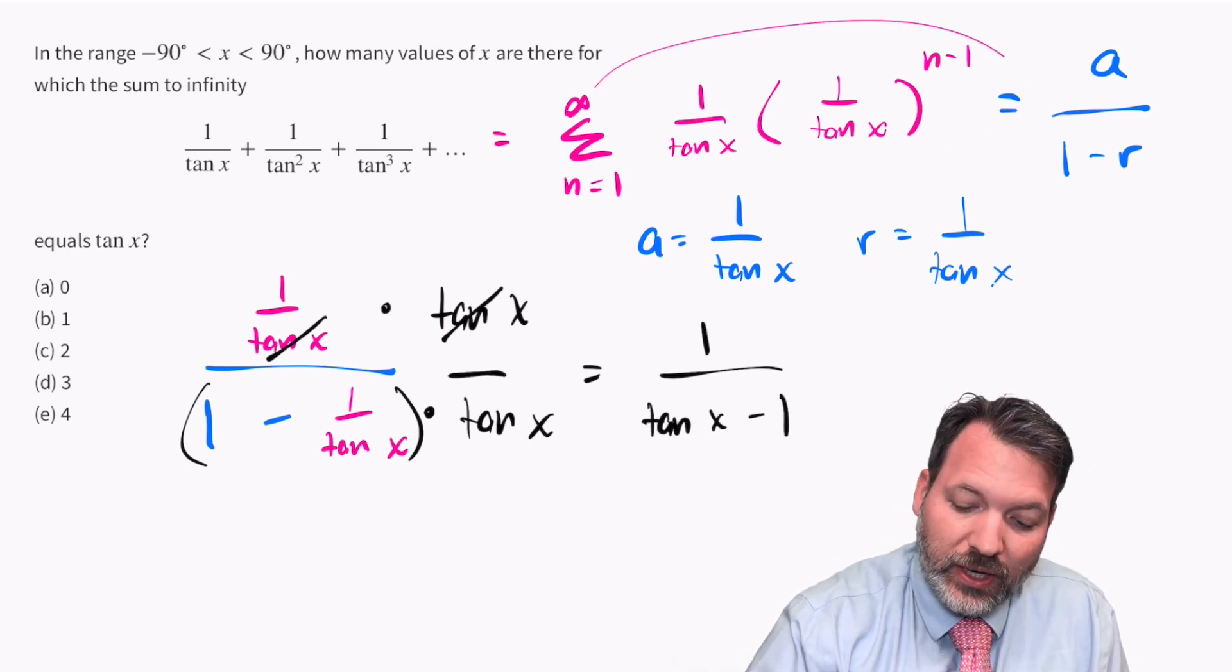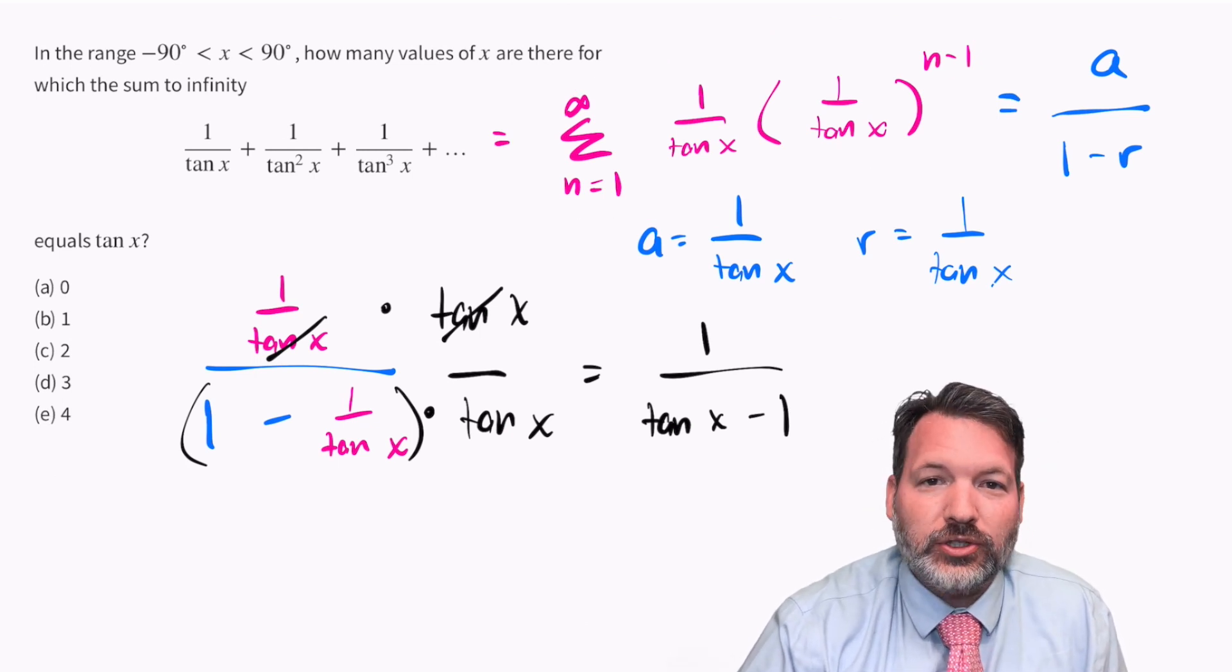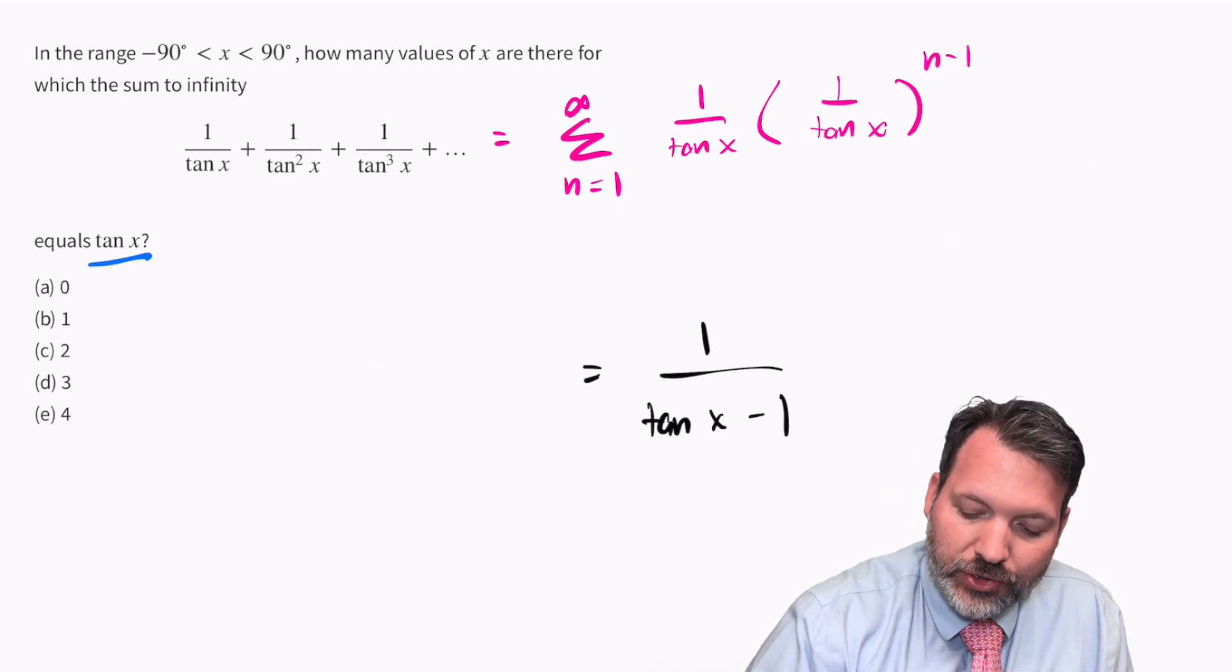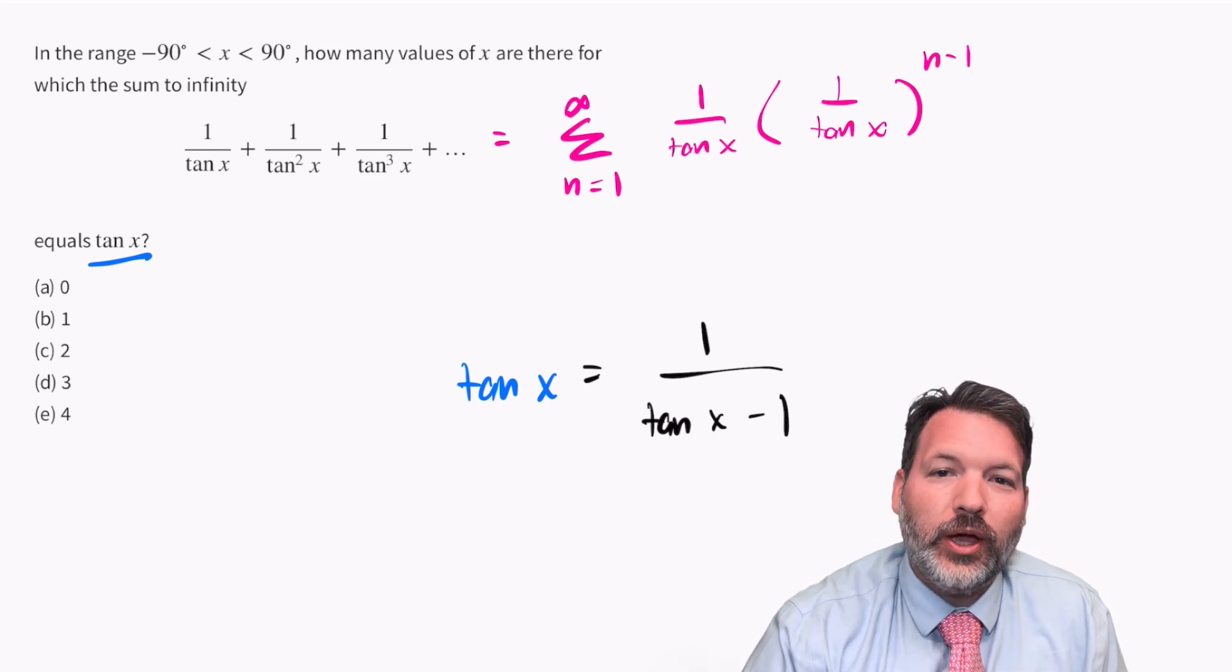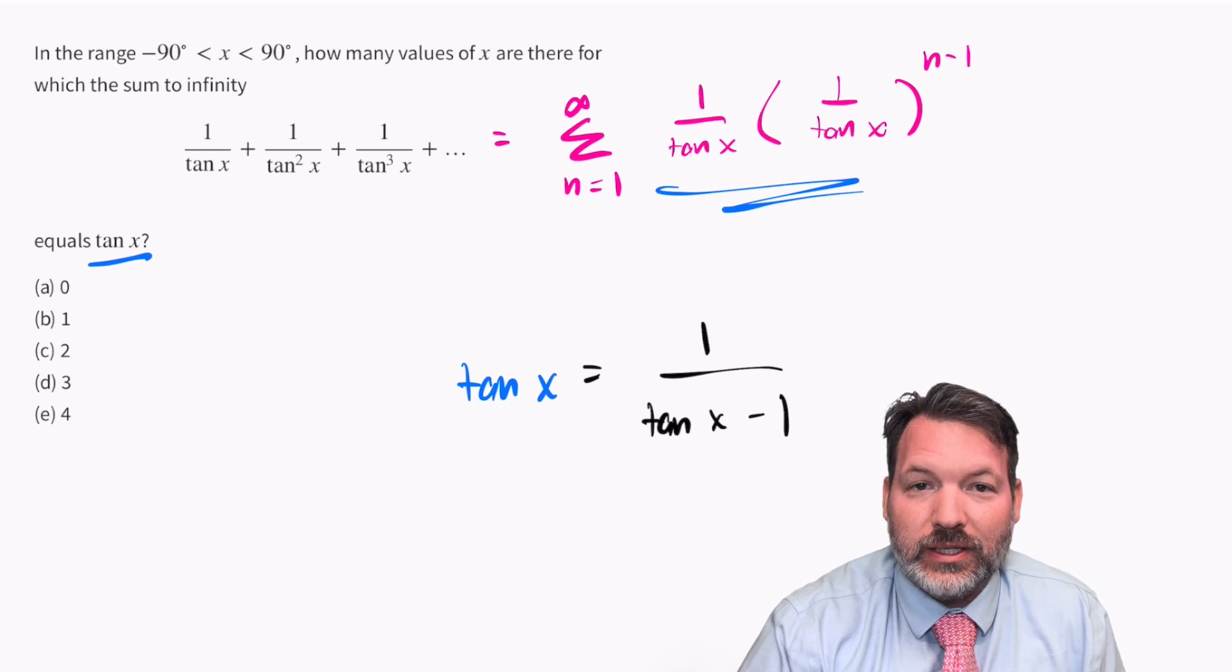So this whole series here, provided it converges, is the same thing as 1 over tangent x minus one. What that means is this question really boils down to where can we expect tangent x to be equal to 1 over tangent x minus one, provided this infinite series is converging.